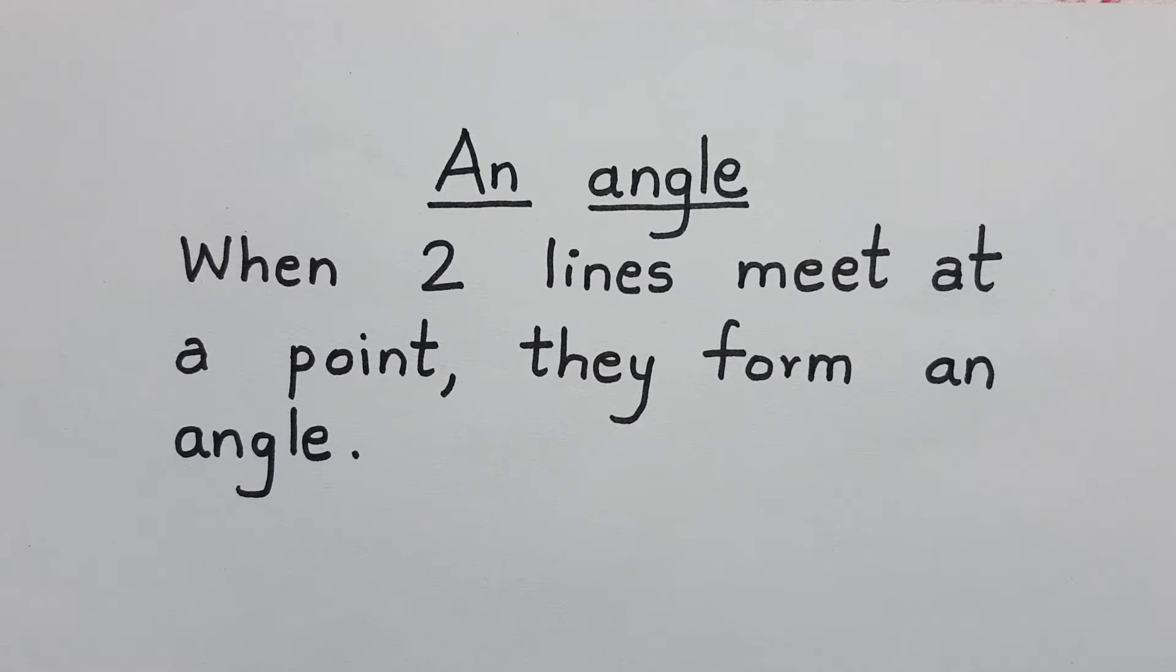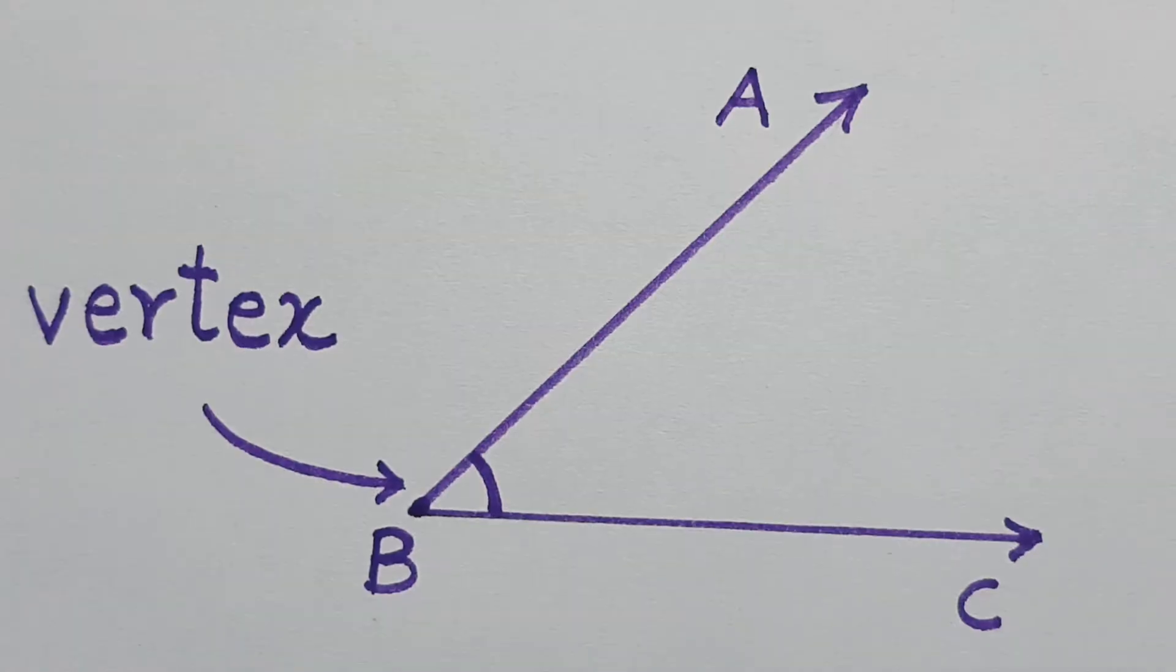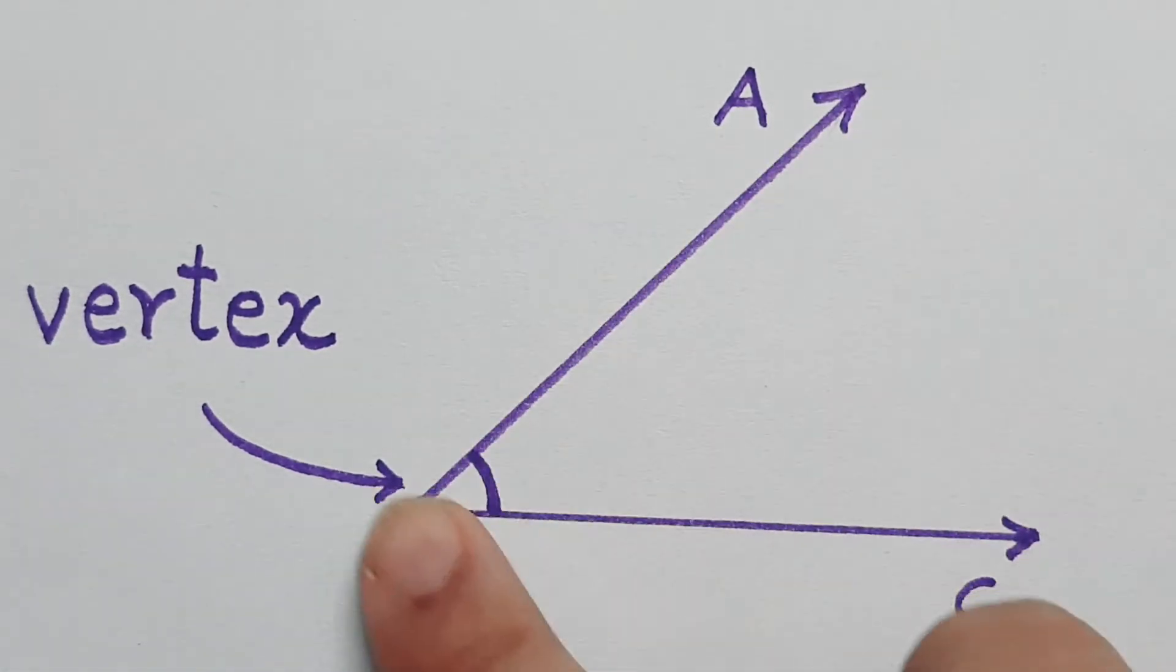Students, you know that when two lines or rays meet at a point, they form an angle. Now, let us see an angle. Here, you can see an angle ABC.